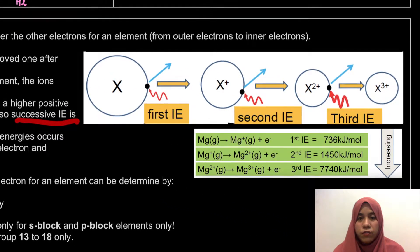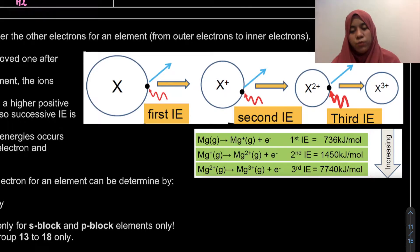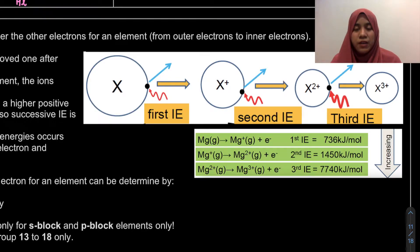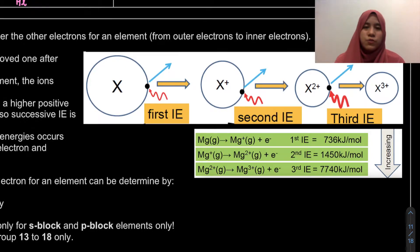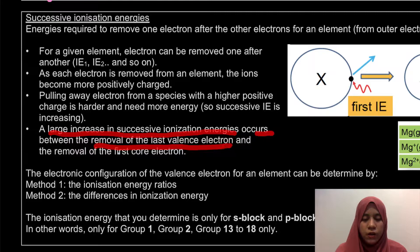Here is an example of successive ionization energy for magnesium. As we can see, from the first until the third ionization energy will be increasing, because when we remove the electron from a positively charged species, it becomes harder due to attraction between the positively charged ion and the electron. A large increase in successive ionization energy occurs between the removal of the last valence electron and the first core electron.